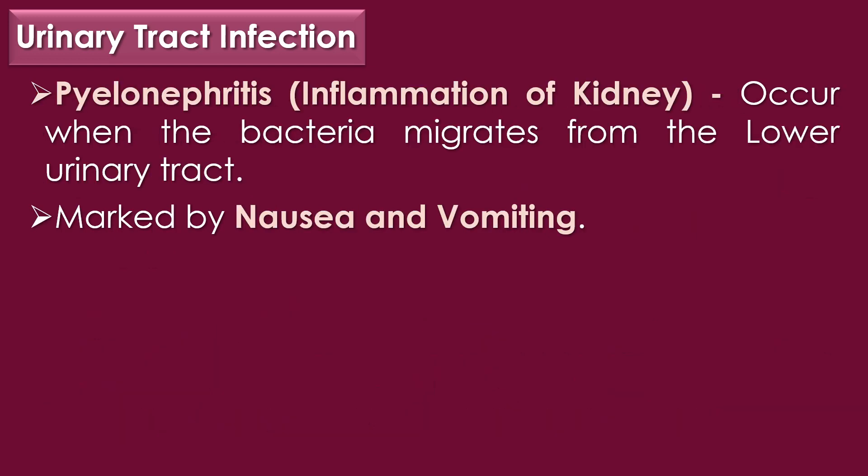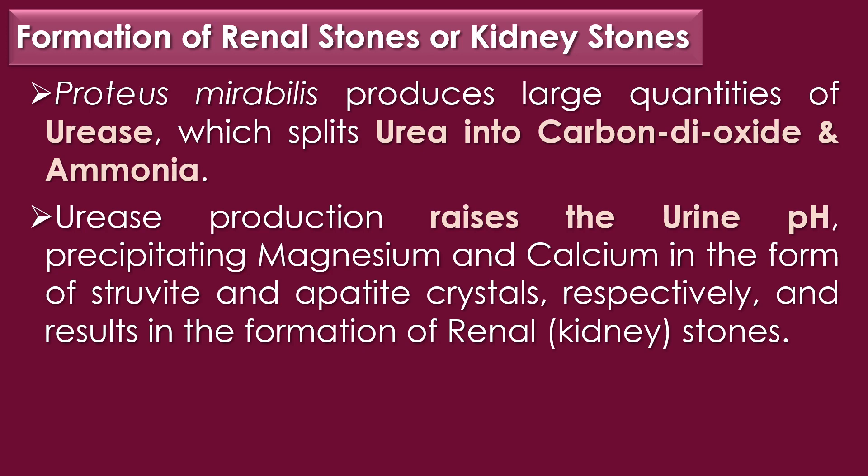Pyelonephritis, or inflammation of the kidney, can occur when bacteria migrate from the lower urinary tract, and is marked by nausea and vomiting. The second clinical condition is formation of renal stones or kidney stones. Proteus mirabilis produces large quantities of urease, which splits urea into carbon dioxide and ammonia, raising urine pH and precipitating magnesium and calcium in the form of struvite and apatite crystals, resulting in kidney stones.